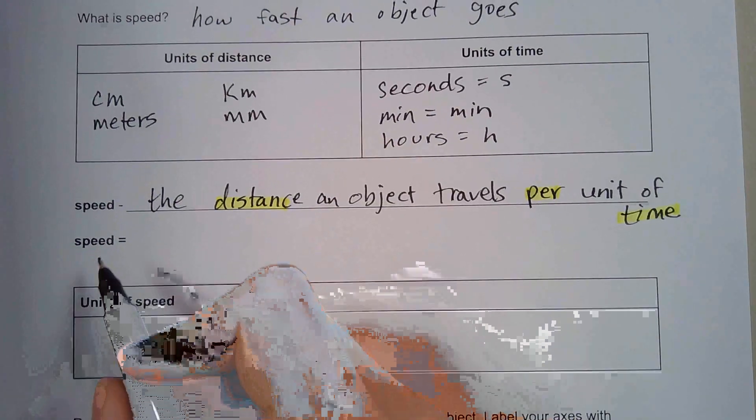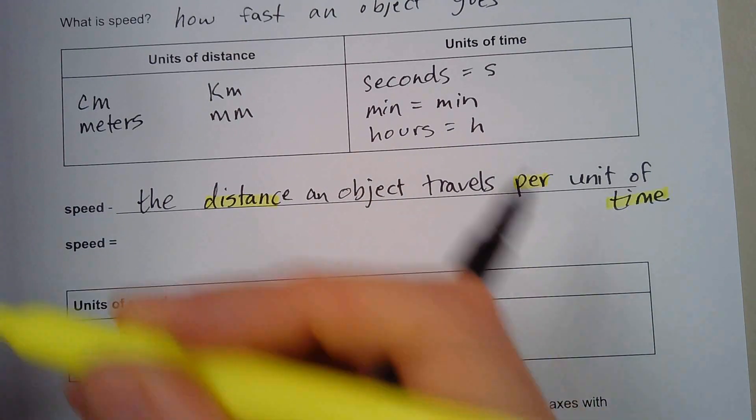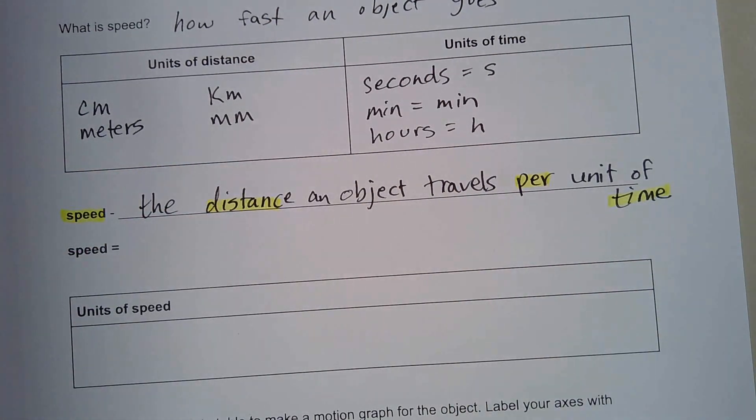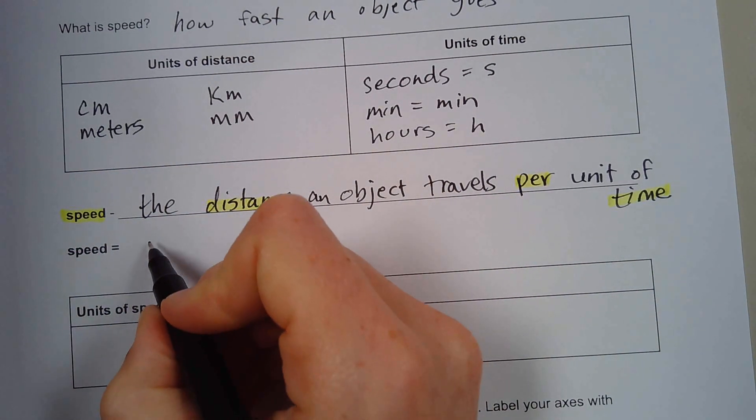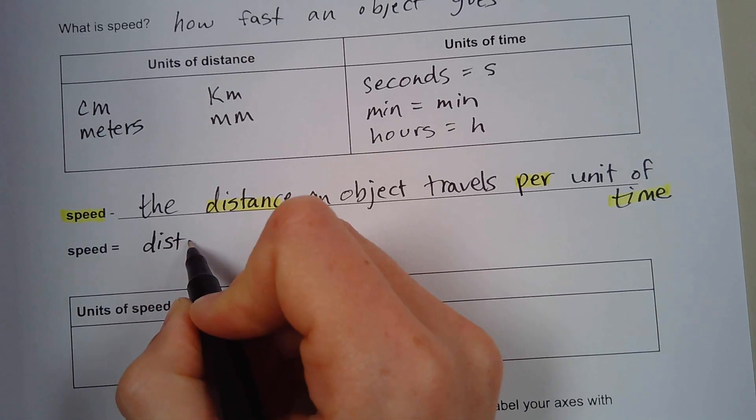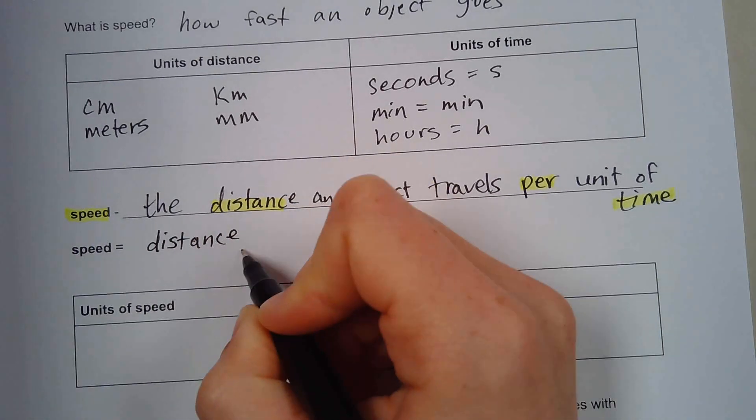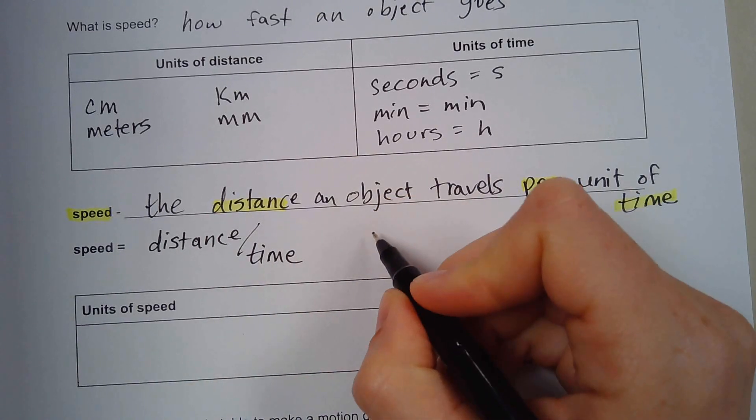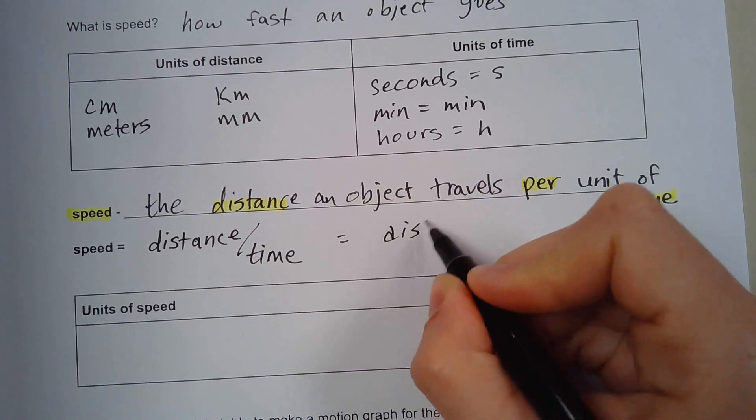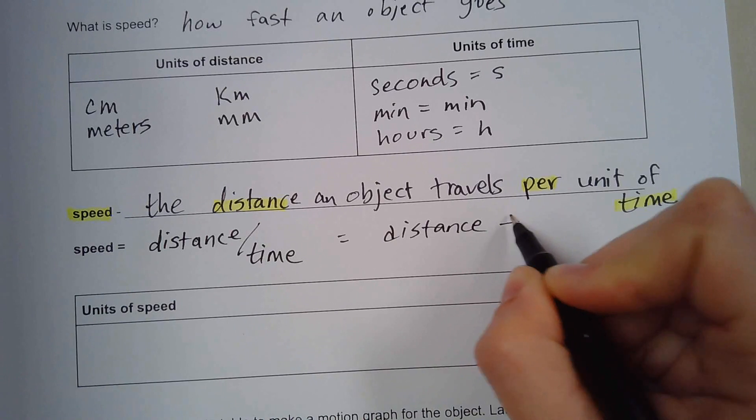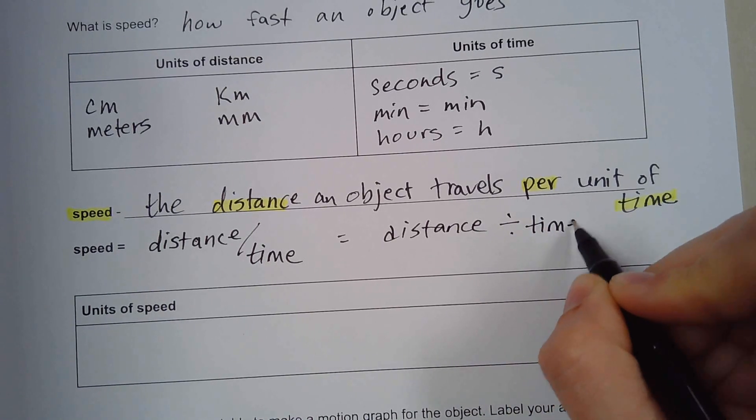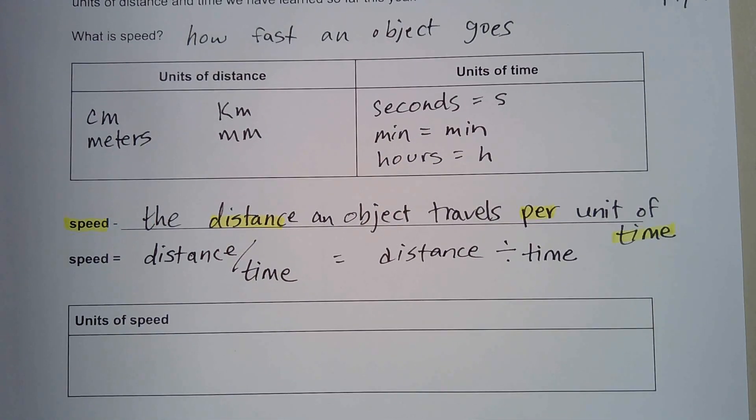This gives us this equation. Speed is a definition, a vocabulary term, but speed equals distance per time. You can also say that as distance divided by time. We'll do some examples with this here in just a little bit.